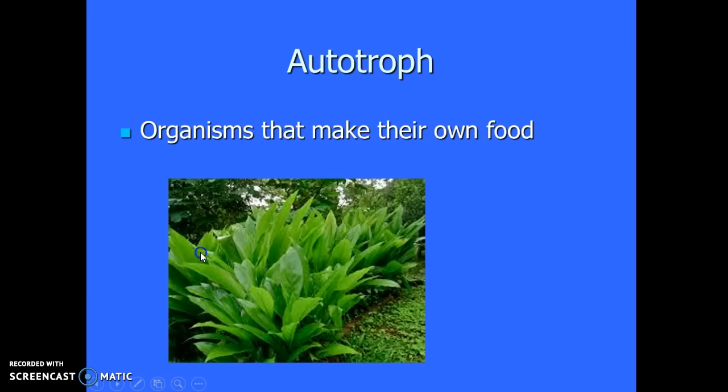First word is autotroph. An autotroph is any organism that can make their own food by using the sun through photosynthesis. So anything that has chloroplasts would be considered an autotroph. They have to have chloroplasts because they need to use the sun to make their own food.